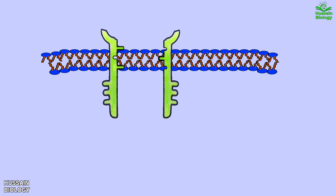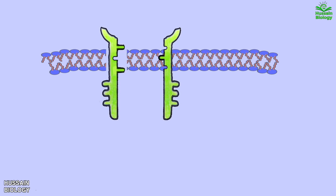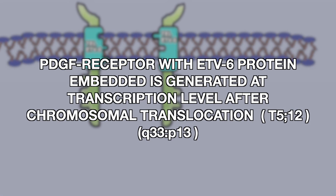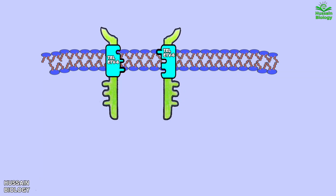On the other hand, when we have chromosomal translocation as described earlier — where we get the oncogene — we get a mutated PDGFR receptor along with the ETV6 fused protein on its extracellular domain. In this animation, this part of the PDGFR receptor is replaced with the oncoprotein containing the TEL/ETV6 fused protein. Note that this animation is for illustration purposes only; the actual PDGFR receptor with ETV6 fusion protein is generated at the transcription level after chromosomal translocation.